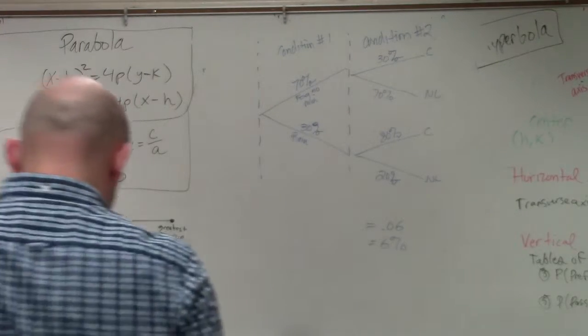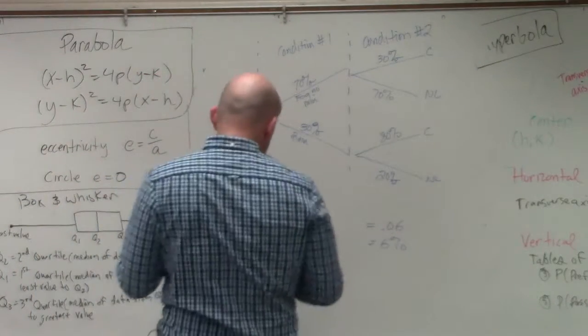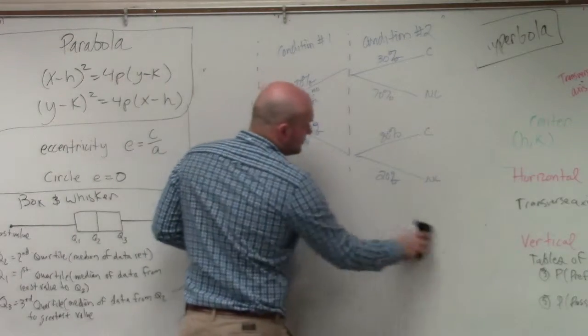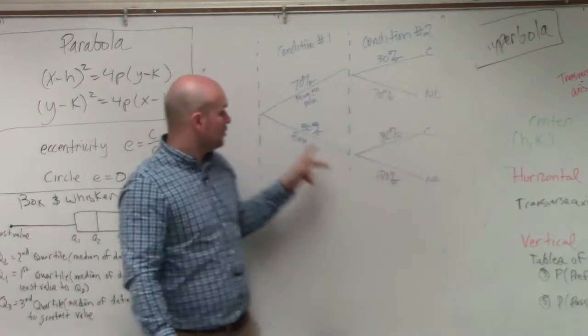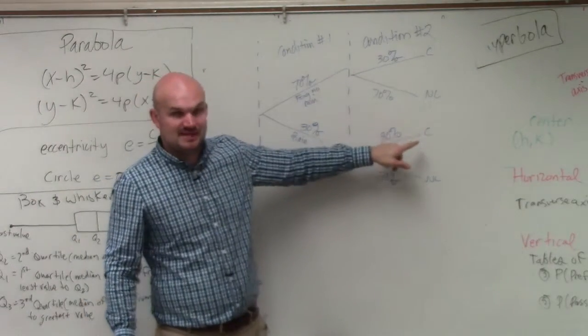The next one, number D, says find the probability that the game will be canceled. So there's a couple of options for the game to be canceled. We could have fog and the game get canceled, or we could have rain and the game get canceled, right?